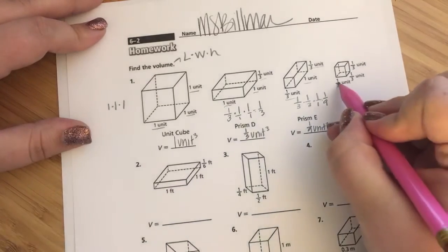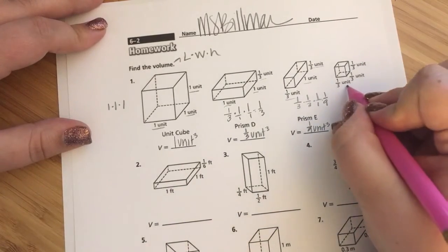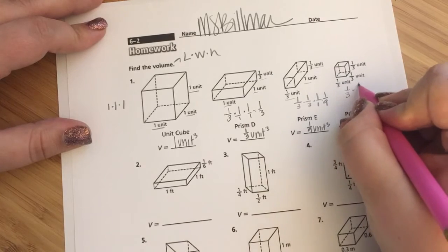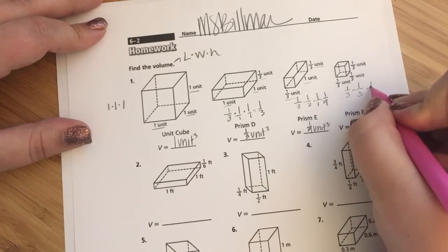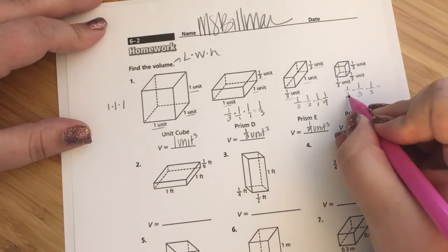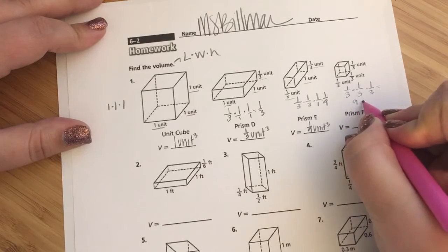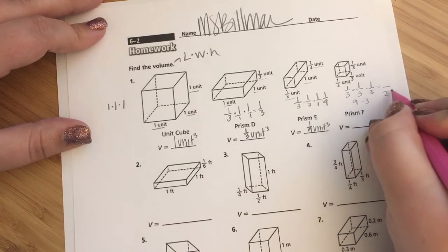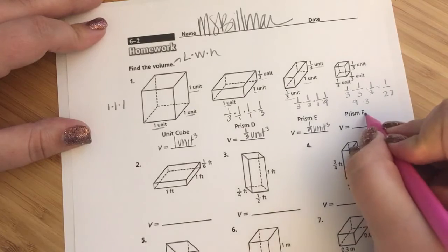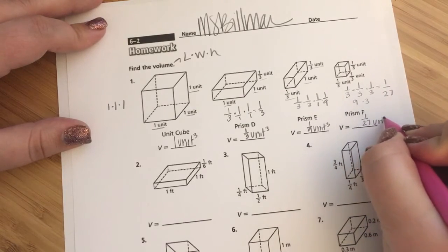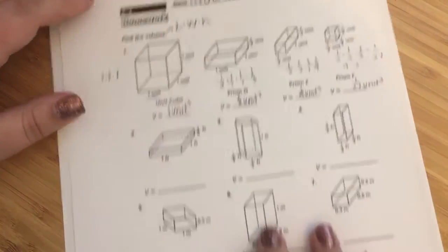1 third multiplied by 1 third multiplied by 1 third. This is like saying 3 times 3 times 3, which ends up being 1 27th cubed. Wow, that is very, very small. And this might be 1 27th of an inch, of a mile, we don't know. It's just labeled unit, but that totally works.